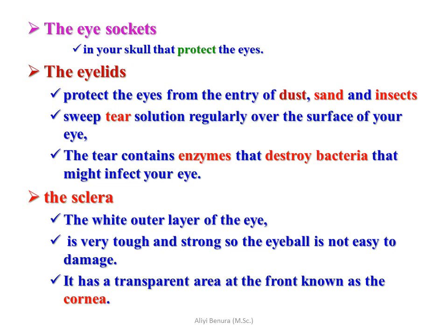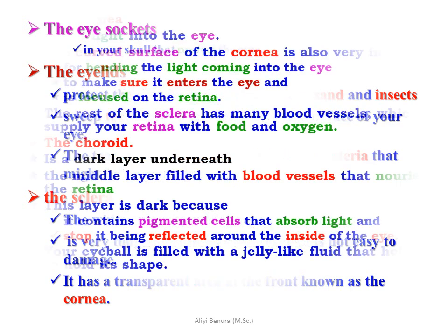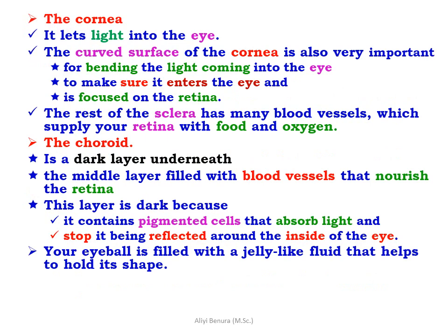The sclera is the white outer layer of the eye; it is very tough and strong so the eyeball is not easy to damage. It has a transparent area at the front known as the cornea. The cornea lets light into the eye, and its curved surface is very important for bending the light coming into the eye to make sure it is focused on the retina.